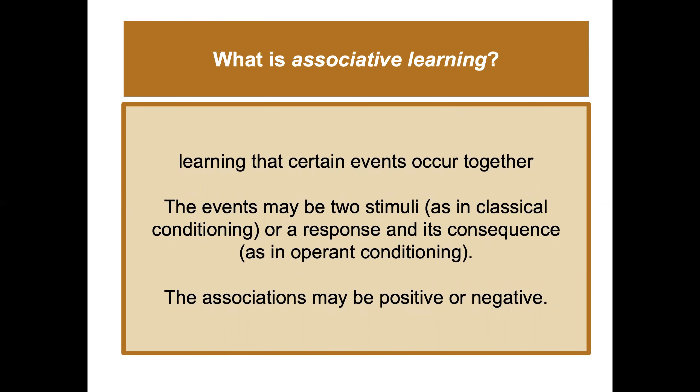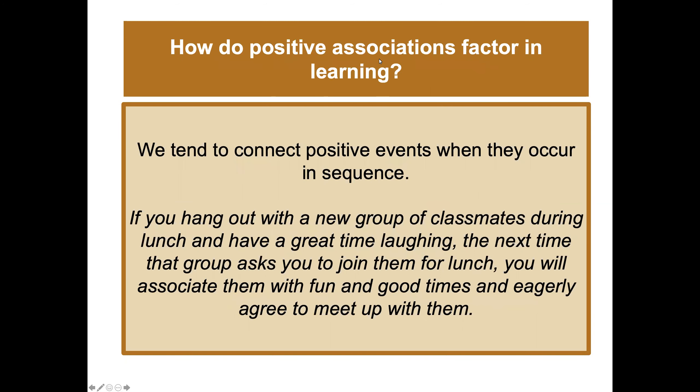What is associative learning? It's learning that certain events occur together — they're associated. Associative learning is simply that certain things are associated with each other. The events may be two stimuli, as in classical conditioning, or a response and its consequence, which aligns with operant conditioning.